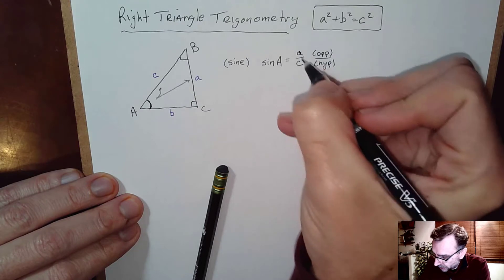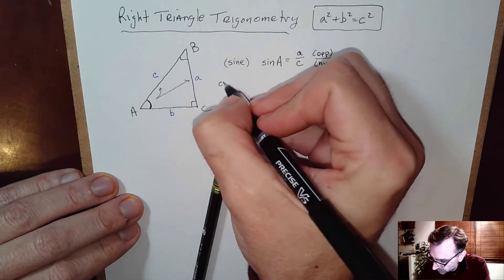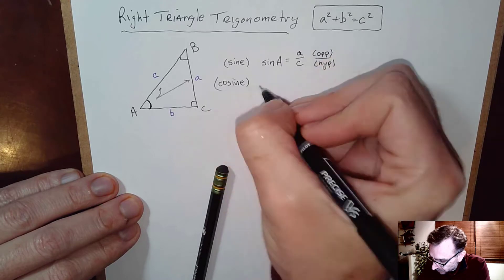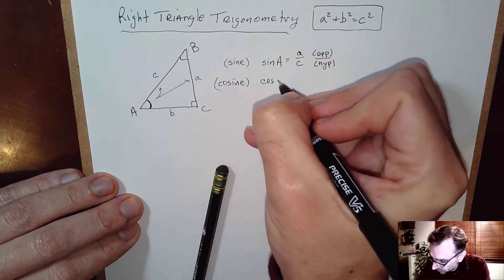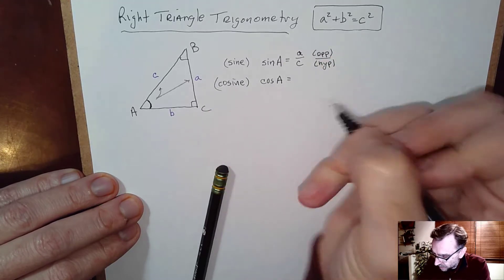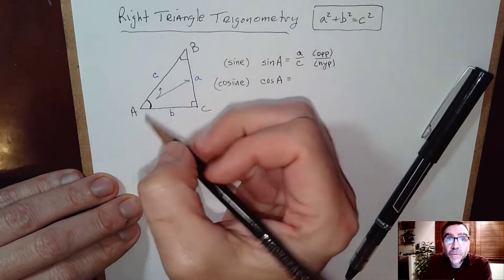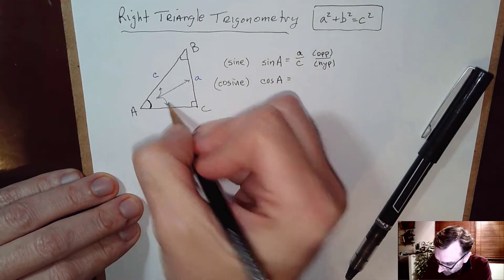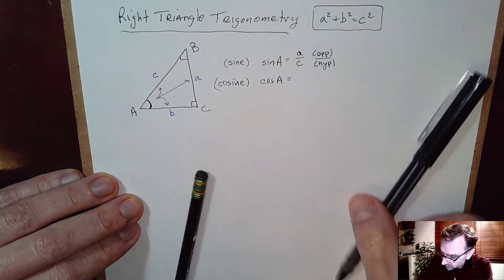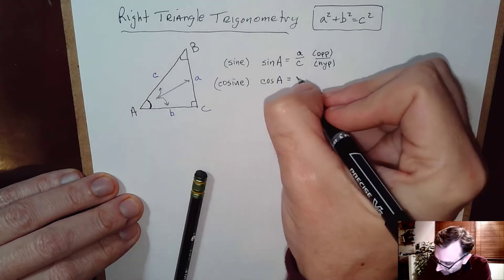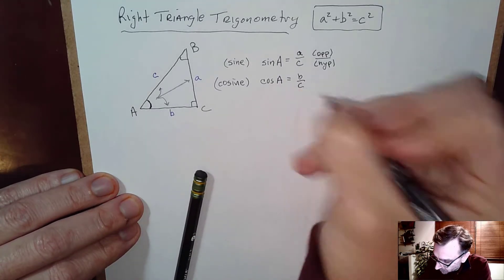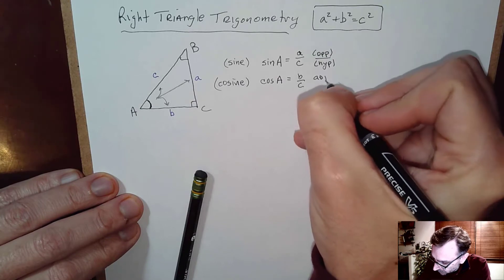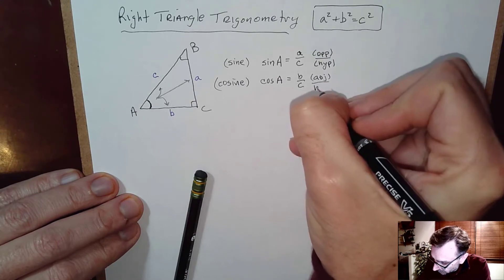The second ratio that's named is cosine, abbreviated COS. Cosine of A is defined to be the ratio of the side adjacent — that's B — to the hypotenuse. So that fraction B over C is called cosine: adjacent over hypotenuse.